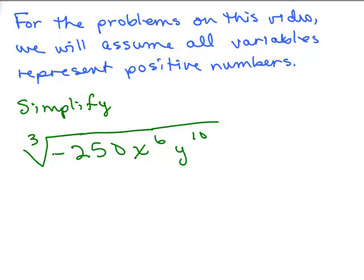Since it's a cube root with a minus sign, pull that minus sign out to the front to begin with. We want to write 250 as a perfect cube times something. We could do 125 times 2. Hopefully you recognize that 125 is the perfect cube.